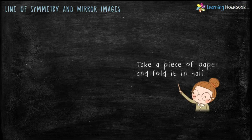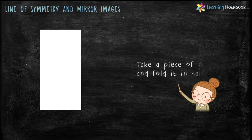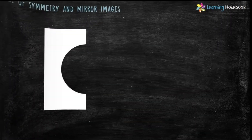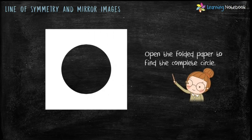Let's understand line of symmetry and reflection with the help of an activity. Take a piece of paper and fold it in half. Now draw a half circle and cut on the line. You may take your parents' help for this. When you are done with the cutting, the paper would look as shown here. Now open the folded paper and you will find a complete circle made out of 2 semicircles.